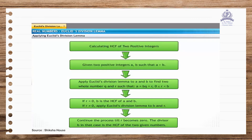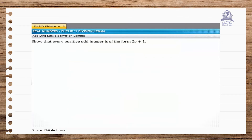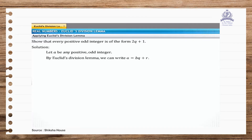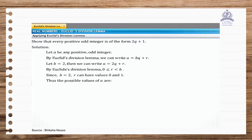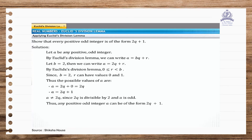Euclid's division algorithm can also be used to find common properties of numbers. Let's show that every positive odd integer is of the form 2Q + 1. Let A be any positive odd integer. By Euclid's division lemma, A = BQ + R. Taking B as 2, A = 2Q + R. Since B equals 2, the possible values of R are 0 and 1. Putting in these values, A is either 2Q or 2Q + 1. Since 2Q is divisible by 2 and A is odd, any positive odd integer must be of the form 2Q + 1.